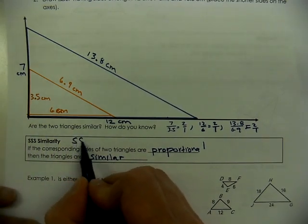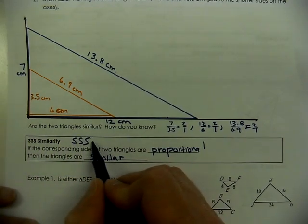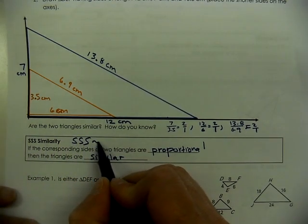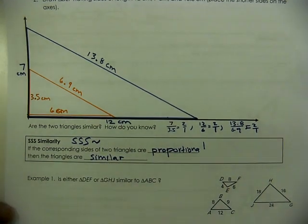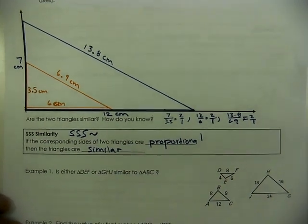So as we write this concept, we'll notate it as side-side-side with the similarity symbol. That's how we'll write that. Let's take a look at a couple of examples.